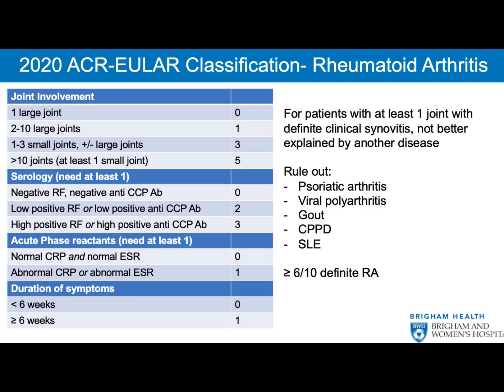Category 4 — Inflammatory Markers (0 to 1 point): Erythrocyte sedimentation rate (ESR) or C-reactive protein (CRP) are assessed. Normal levels score 0 points. Elevated levels score 1 point.